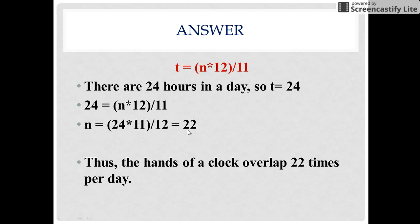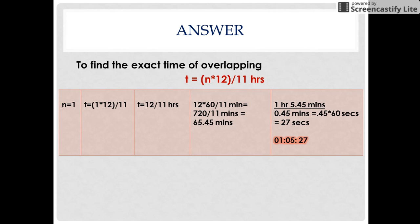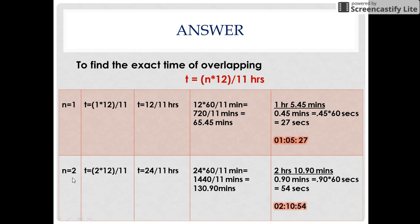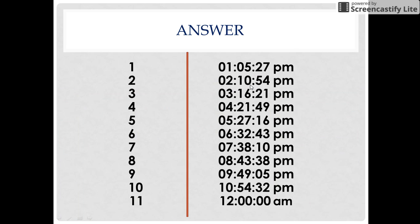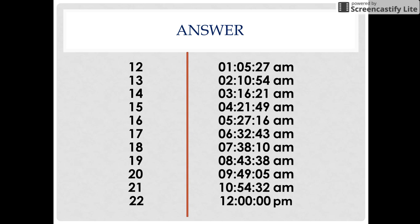Thus, the minute hand and the hour hand of a clock overlap 22 times per day. To find the exact timing of the first overlap, we put n = 1 in the equation and find T = 12/11 hours, which simplifies to 1 hour, 5 minutes, and 27 seconds past noon. Similarly, we can find the other overlap times by putting n = 2, 3, and so on. The table shown represents the various times when the minute hand and the hour hand overlap in a day. Thus, the minute hand and the hour hand overlap 22 times in a day.